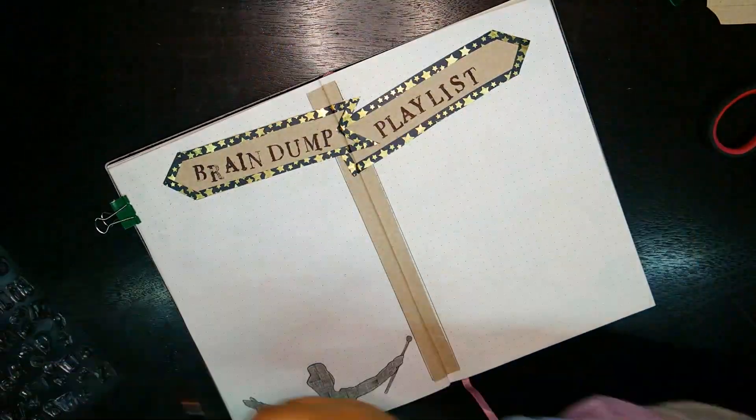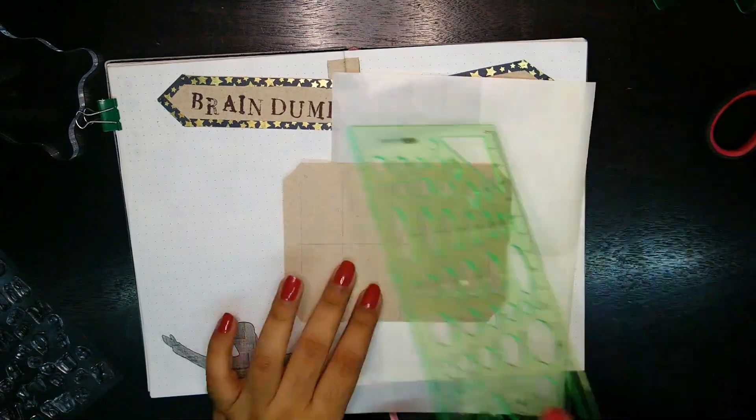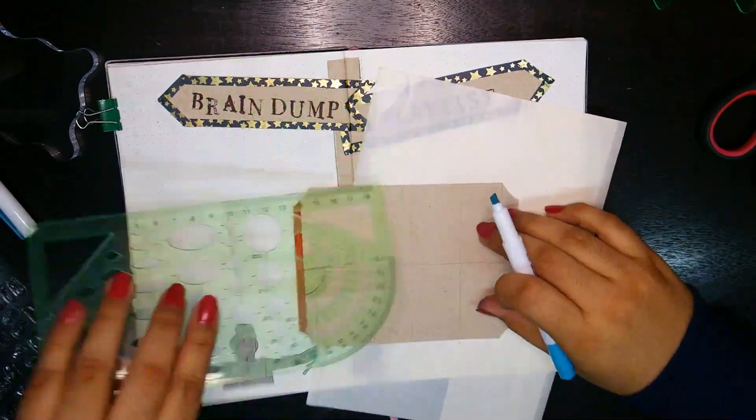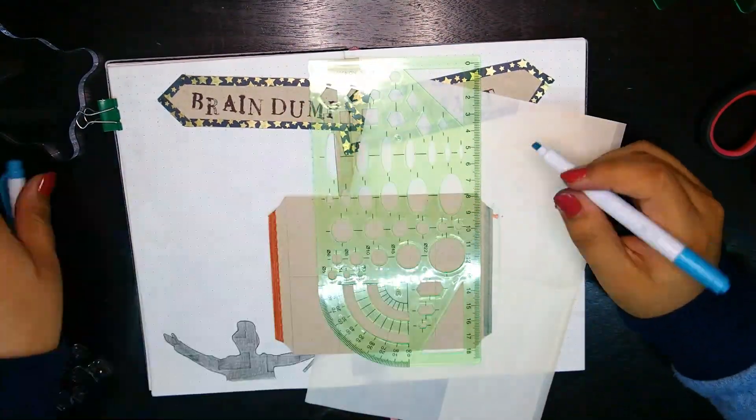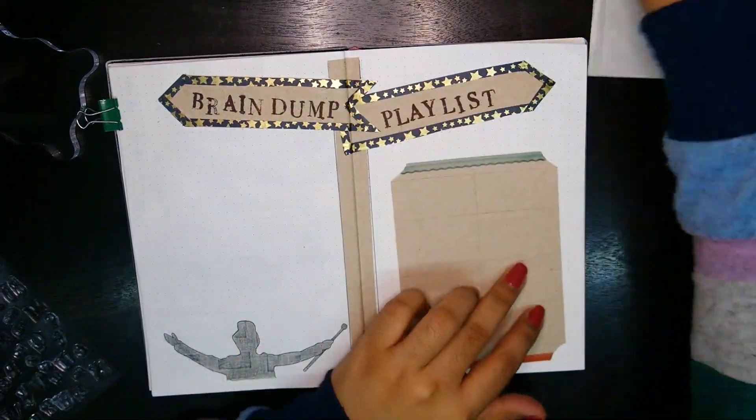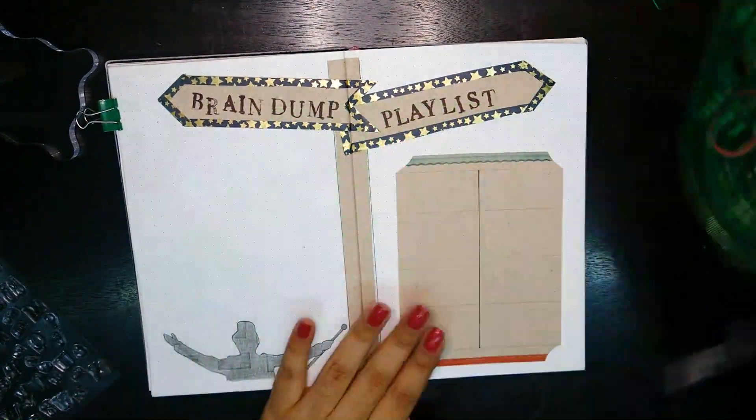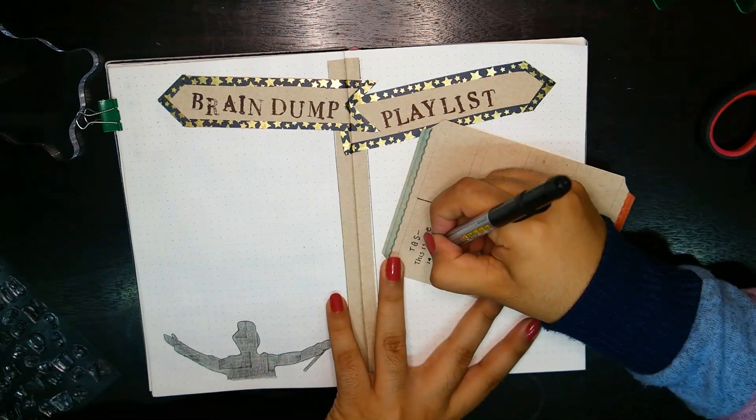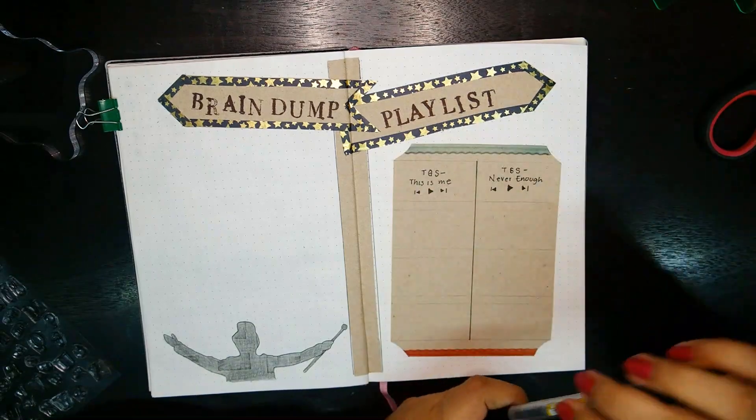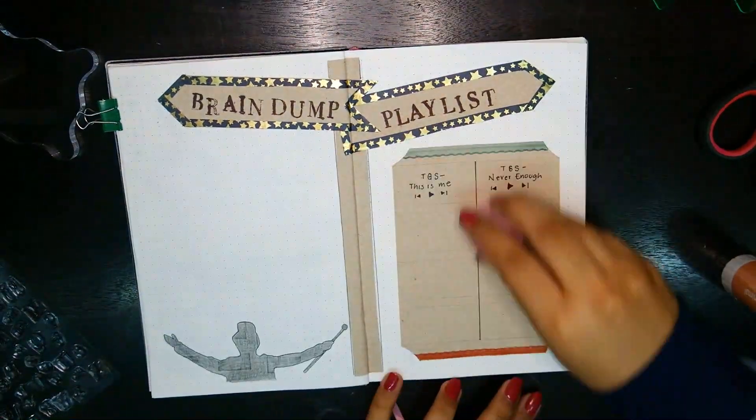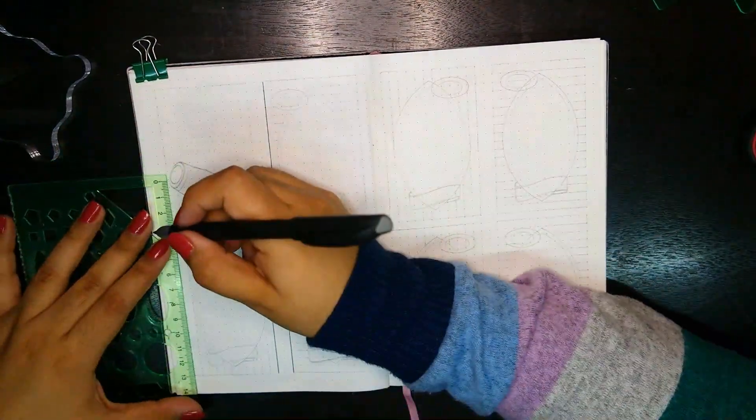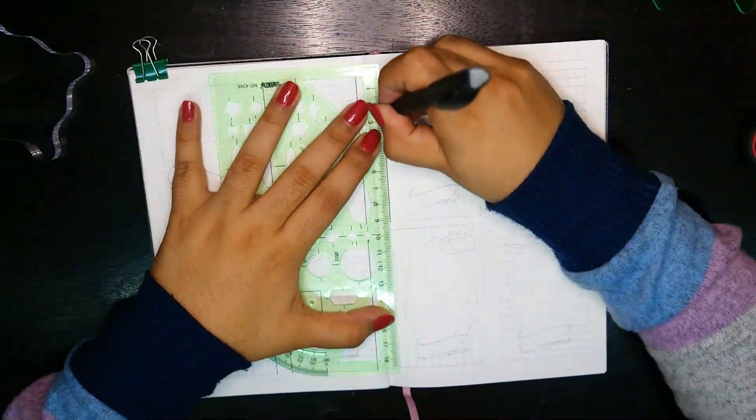I continue by stamping the title for my playlist. This is also a spread that I'm trying for the first time. I used to have what's called a 'currently' spread to write down what I was reading, watching, and listening to. But because I'm starting a movie journal and keeping my reads on my yearly setup, I decided to leave this page just for music. I prepared this piece of paper to have it look like what I would say reminded me of a program where you can see what shows are going to be there for you to see. Finally, the last pages of this setup are for my first weekly spread.